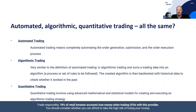In automated trading, we have complete automation of the order generation, order submission, and order execution process — 100% automation. In algorithmic trading, it's very similar, but some argue it's not 100% the same. In algorithmic trading, you turn a trading idea into an algorithm — a process of set rules you follow. The created algorithm is then back-tested with historical data to check whether it worked in the past. It's very similar to building a trading strategy: you recognize a pattern and formalize it.